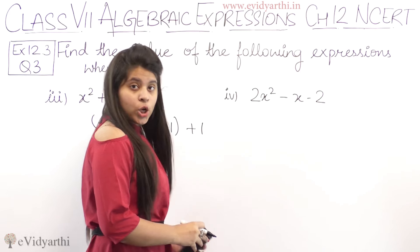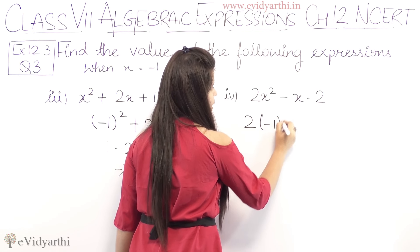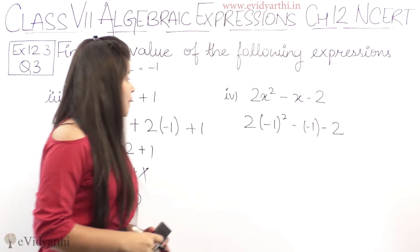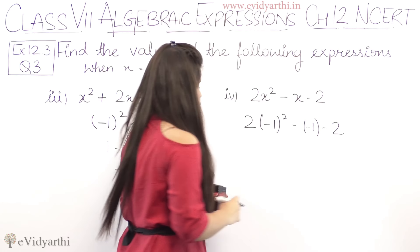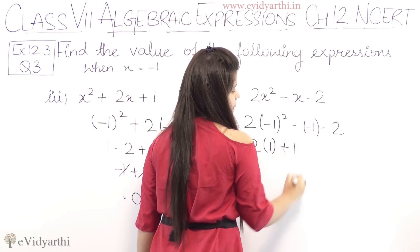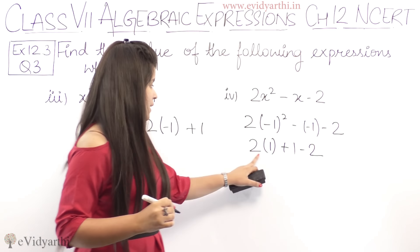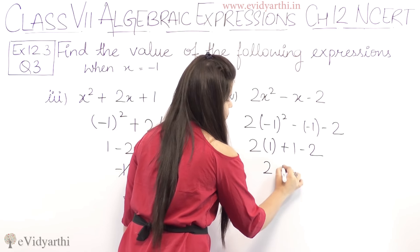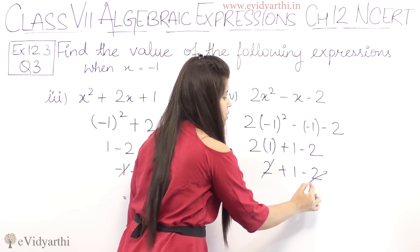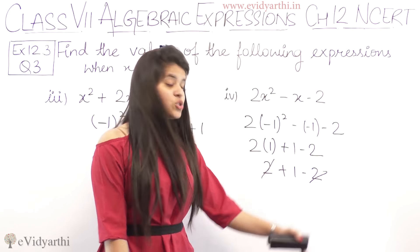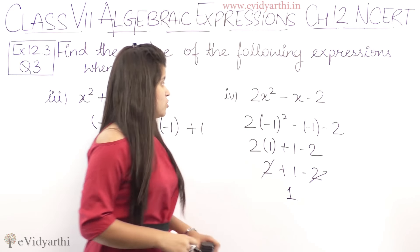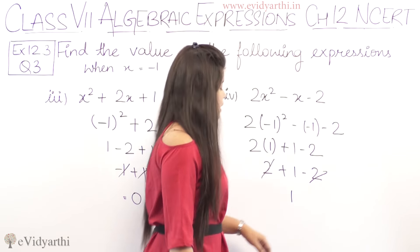Again minus 1 ka square karna hai, so minus 1 ka square is 1. Then minus minus plus, 1 ho jayega. And this is minus 2. Now 2 into 1 is 2 plus 1 minus 2. One positive 2 and one negative 2, 2 se 2 cancel because plus minus minus, minus 2 minus 2 will be 0. So answer is 1. So the fourth part answer is 1.